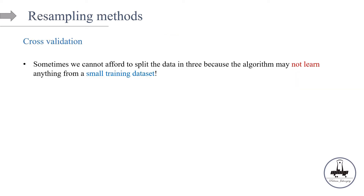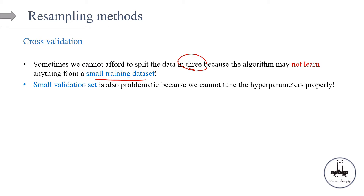If the data set is not large enough, we need to do something which is called resampling methods. One of the resampling methods is called cross-validation. Down the road in this course, I'll talk about different resampling methods as well — for example, what is bootstrapping, what is oversampling by doing synthetic sampling, et cetera. But right now, let's focus on cross-validation. Sometimes we cannot afford to split the data into three parts because the algorithm may not learn anything from a small training data set.